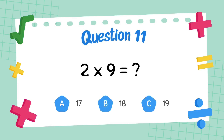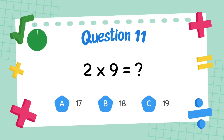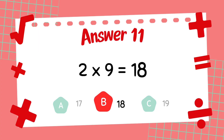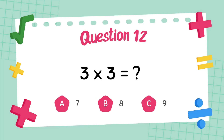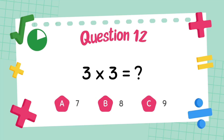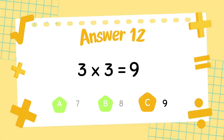What is 2 multiply 9? The answer is 18. What is 3 multiply 3? The answer is 9.